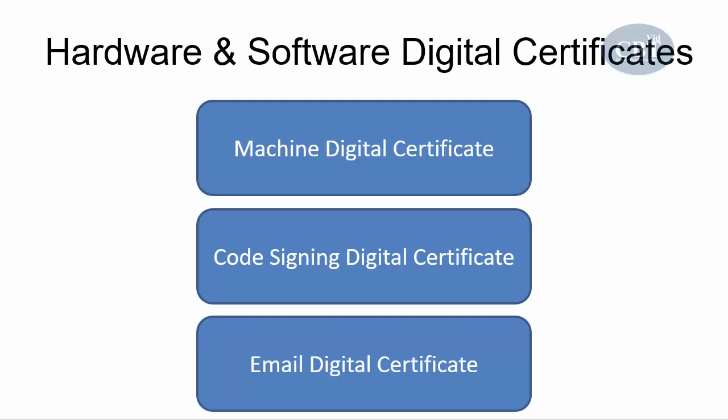The third type of hardware and software digital certificate is the email digital certificate, which is used to digitally sign and encrypt email messages. So in summary, we have three main certificate categories: root digital certificates, domain digital certificates, and hardware and software digital certificates. Under domain certificates there are four types, and under hardware and software digital certificates there are three types.